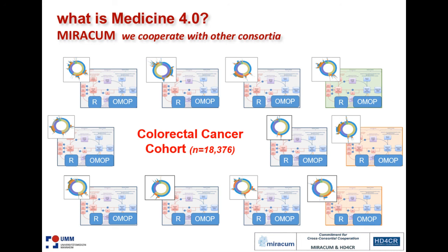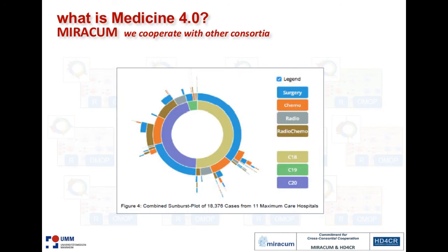This way, within two or three weeks, we were able in Germany to compile data from 18,000 colorectal cancer patients from these eight Miracom sites together with three cooperating sites. From these 80,000 patients, we could deduce a number of interesting features in a sunburst plot — surgery and chemo and radio and certain ICD-10 codes. This is the model that we are using and proposing to use in the future to integrate, extract data, and make sense of large studies.